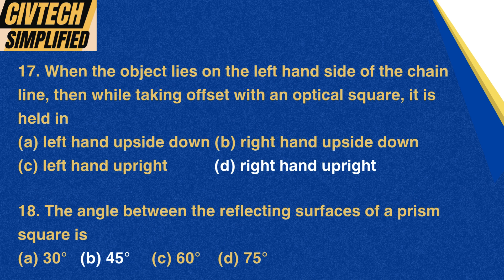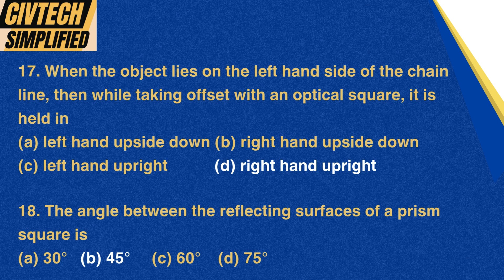Question 17: When the object lies on the left-hand side of the chain line, then while taking offset with an optical square, it is held in: A. Left hand upside down, B. Right hand upside down, C. Left hand upright, D. Right hand upright. Correct option: D. Right hand upright. Question 18: The angle between the reflecting surfaces of a prism square is: A. 30 degrees, B. 45 degrees, C. 60 degrees, D. 75 degrees. Correct option: B. 45 degrees.